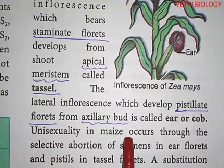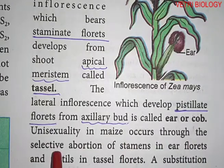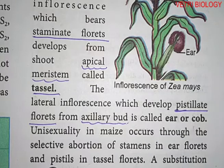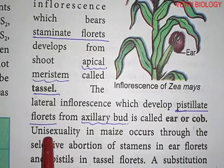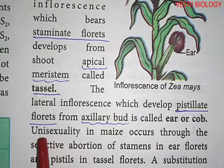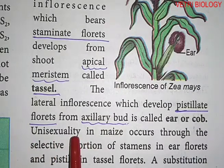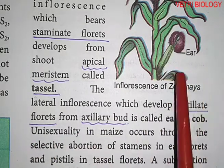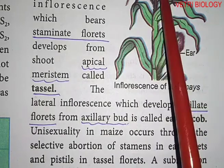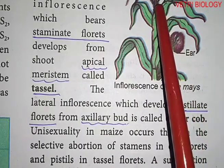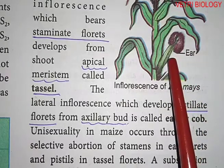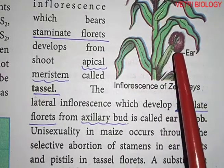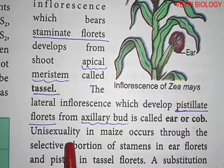Unisexuality in maize occurs through the selective abortion of stamens in ear florets and pistils in tassel florets. Unisexuality means single sexuality — either only female sex or only male sex. The male florets in the tassel and the female florets in the ear or cob are produced this way.